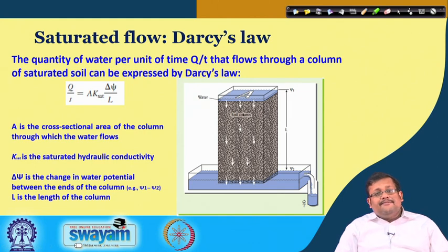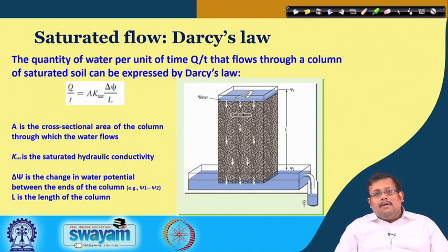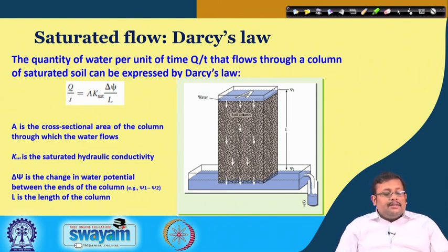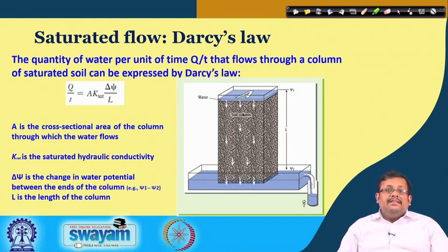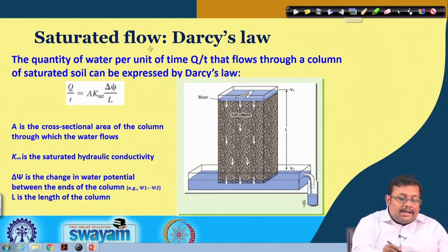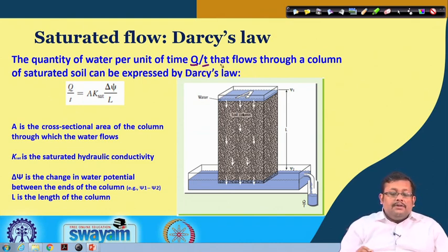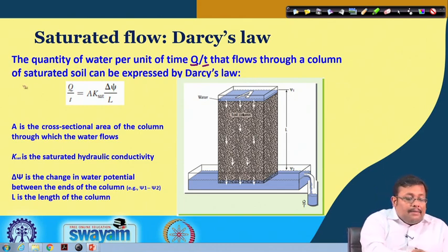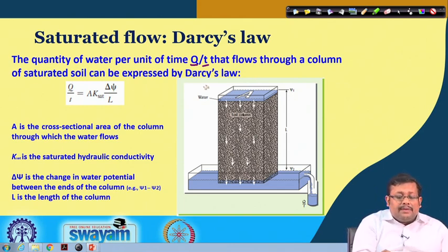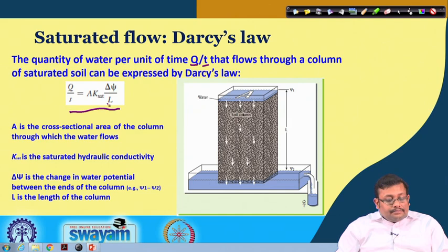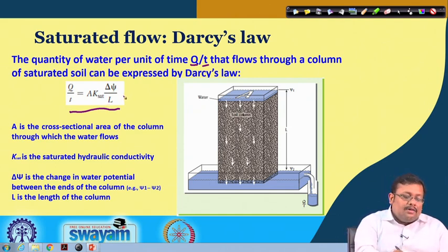Saturated flow of water within the soil obeys Darcy's Law. The quantity of water per unit time Q/t that flows through a column of saturated soil is expressed as: Q/t = A × K_sat × (ΔΨ / L), where A is the cross-sectional area, K_sat is the saturated hydraulic conductivity, ΔΨ is the difference in water potential between the ends of the column, and L is the length of the column.